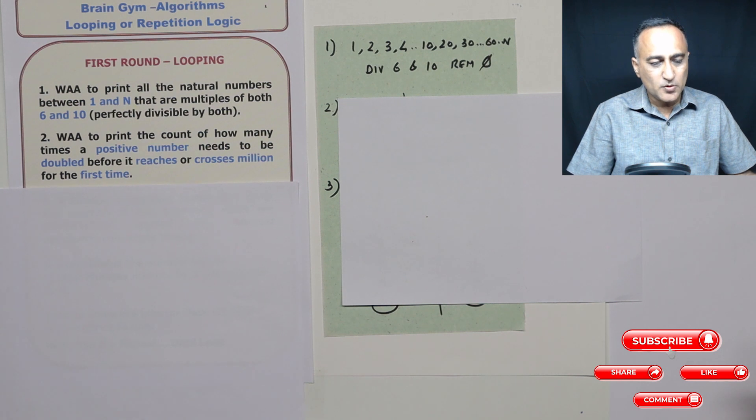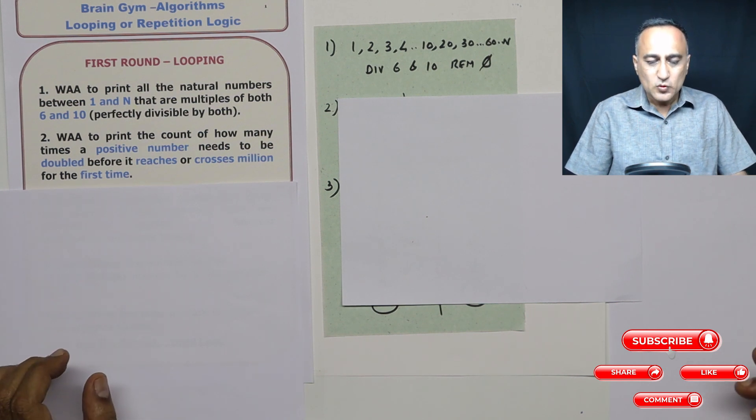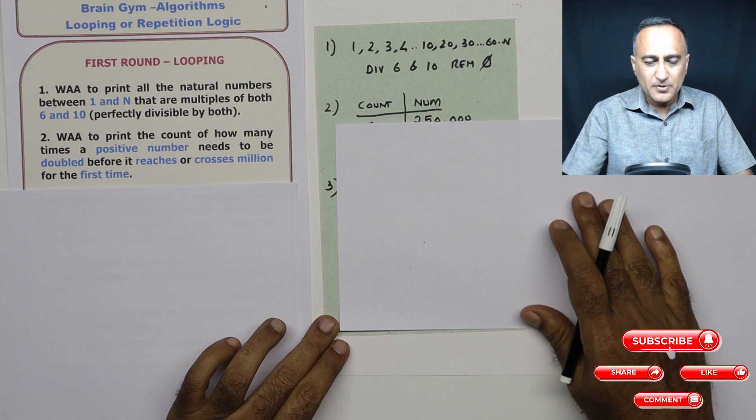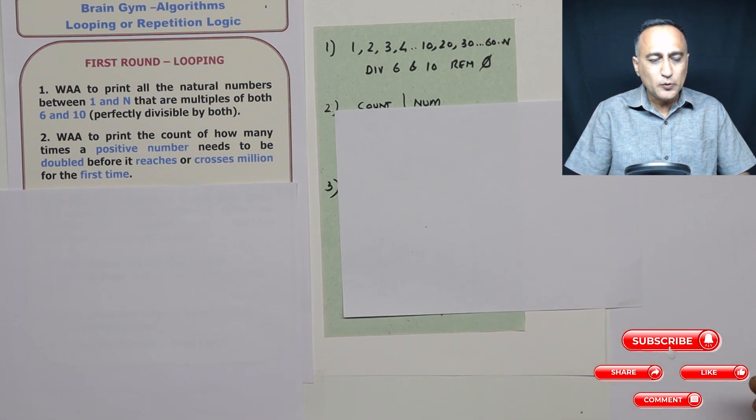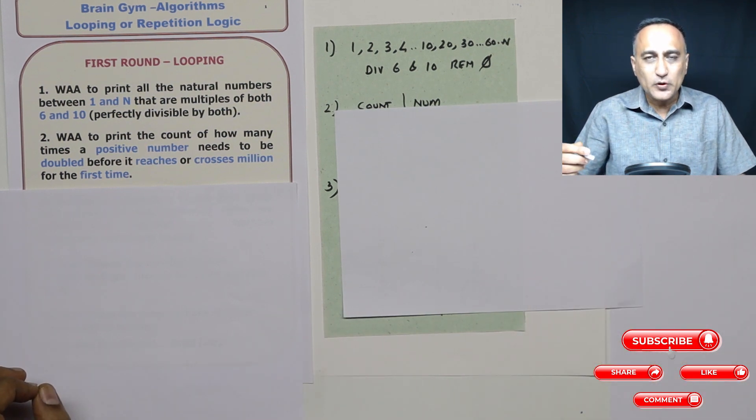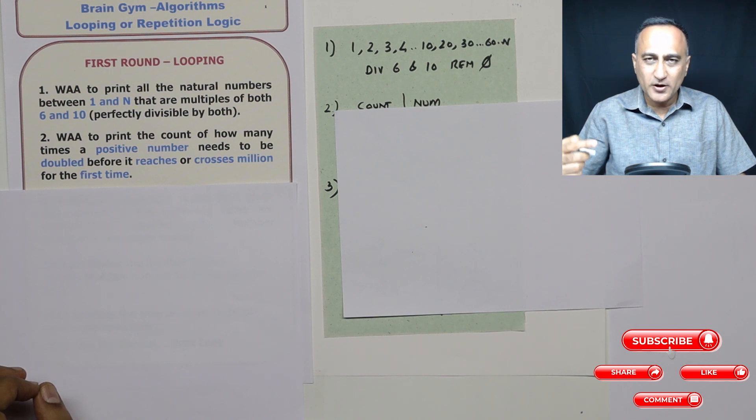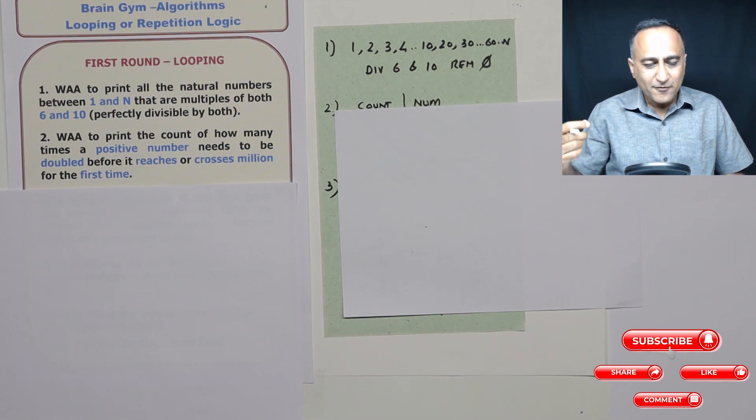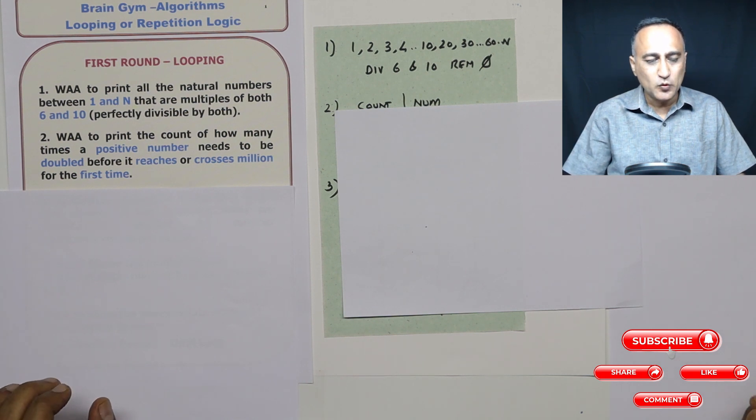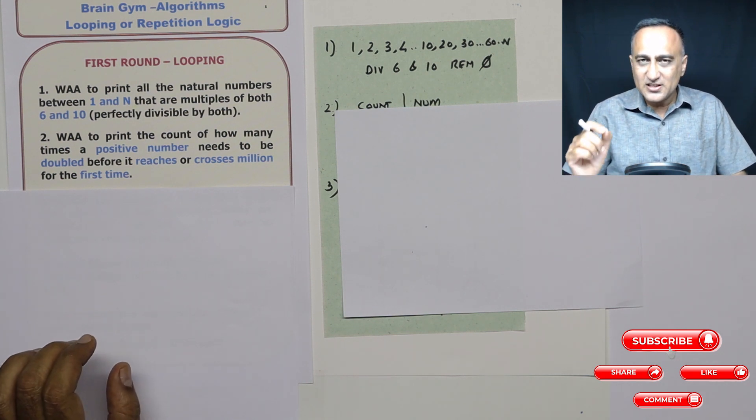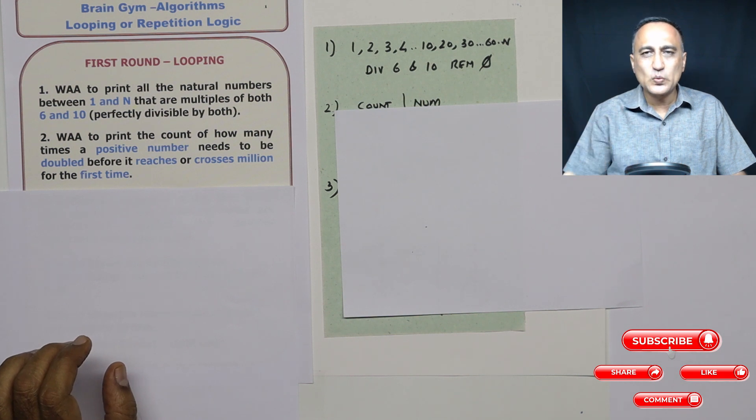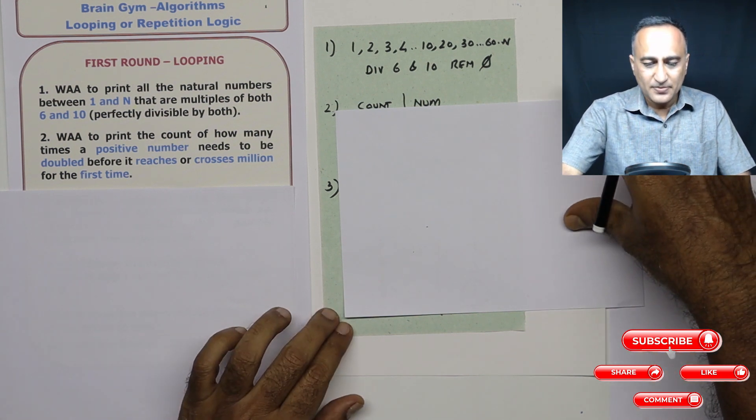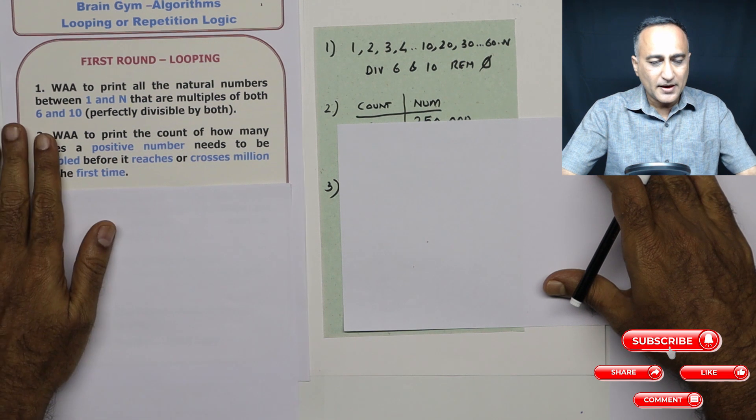Problem number two. So what I'm trying to say is in problem number two, given an input positive number, I need to keep multiplying it by two or doubling it and find out how many times I doubled or multiplied it by two till it touches or just crosses one million for the first time. So let me tell you what I'm trying to expect here.